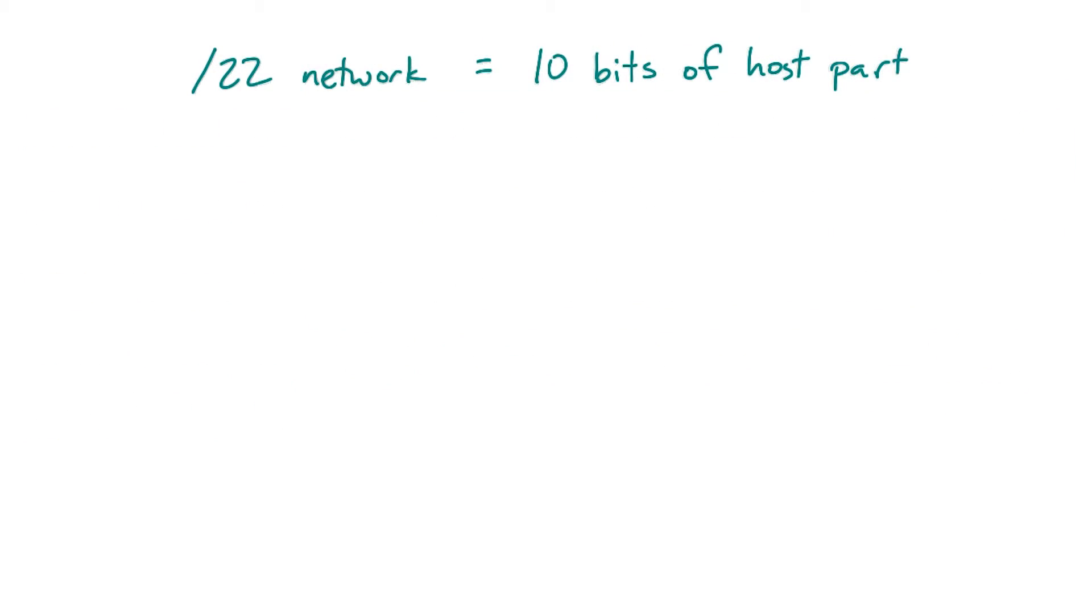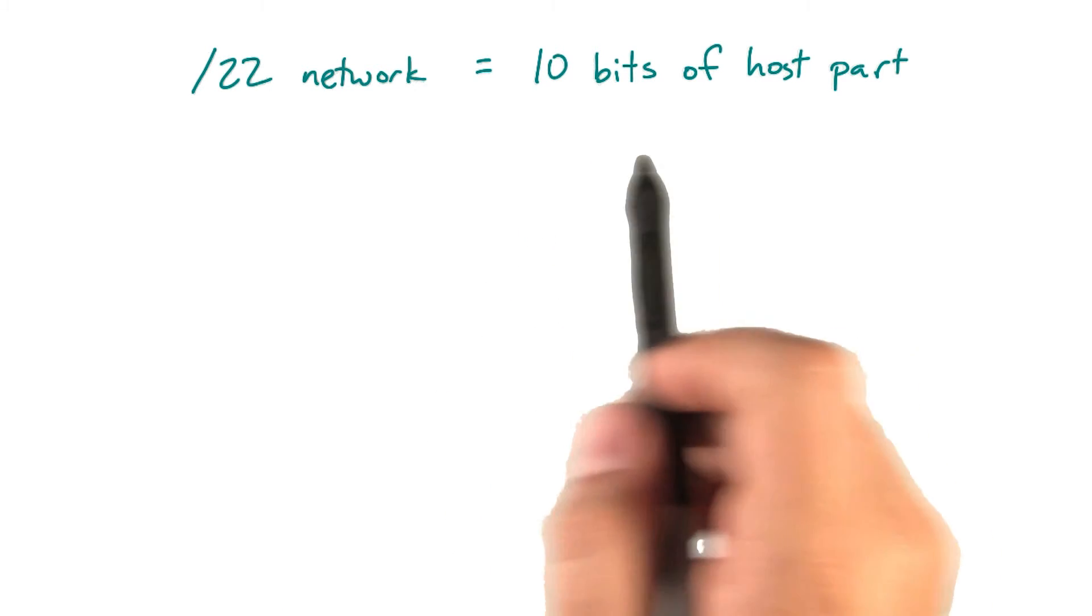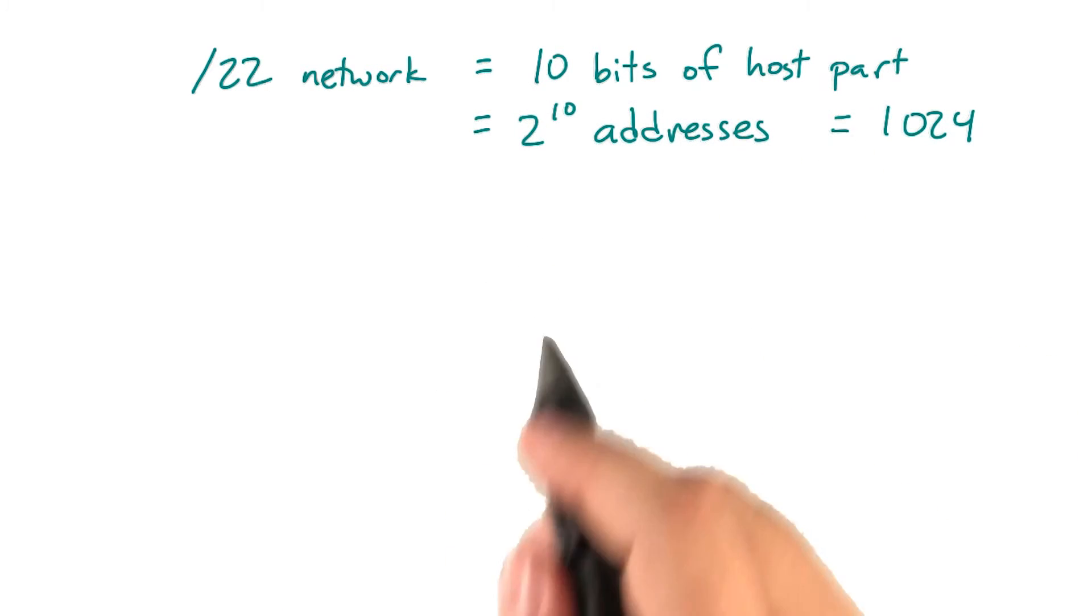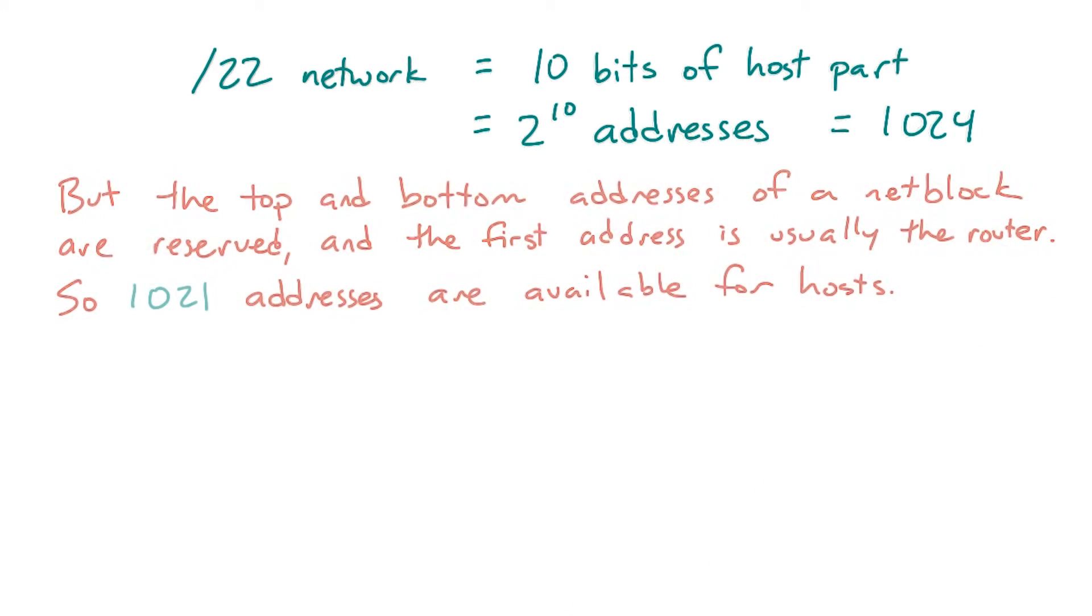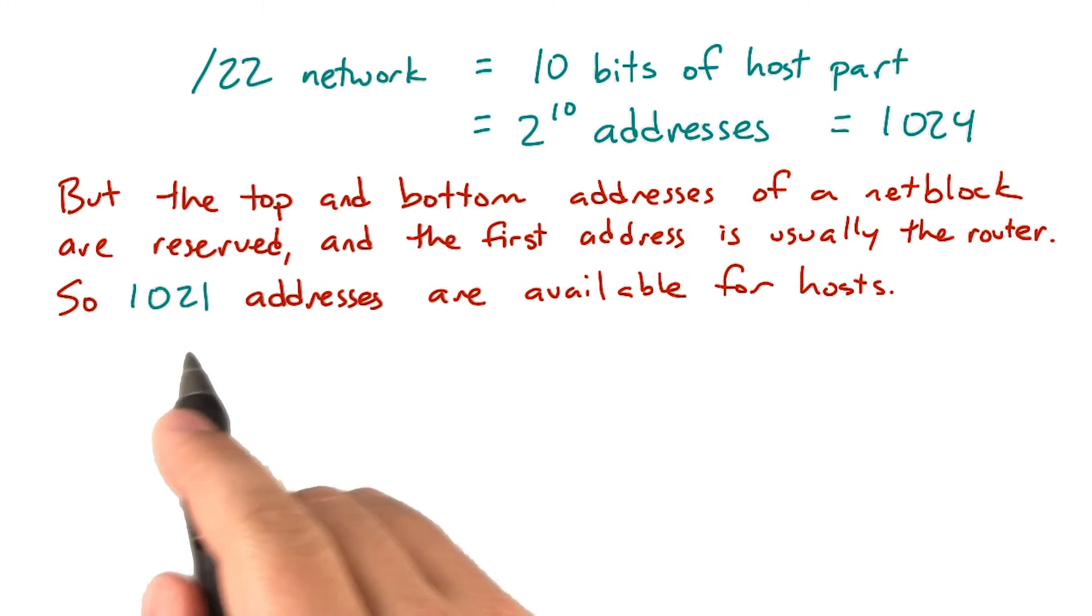So how many hosts can fit on one of these networks? Well, 10 bits of host address means 2 to the 10th power addresses, which would be 1024. However, typically 3 addresses are reserved, so 1,021 addresses are available for hosts.